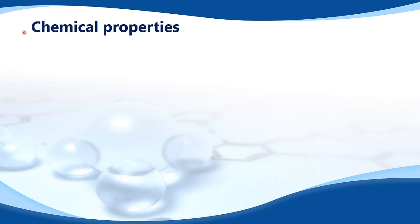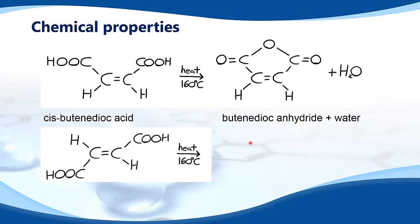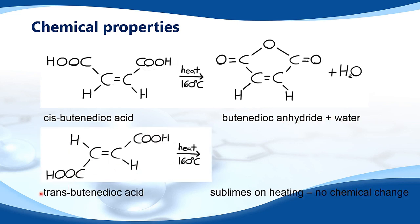Next, we look at chemical properties. When cis-butenedioic acid is heated to 160 degrees, it forms butenedioic anhydride plus water. When trans-butenedioic acid is heated to 160 degrees, it sublimes — changing from a solid to a gas with no liquid phase — but there is no chemical change.